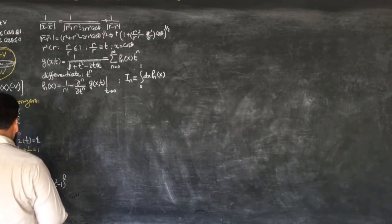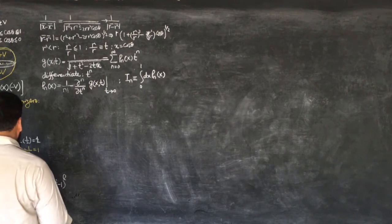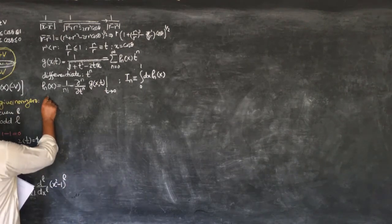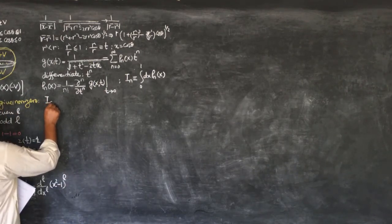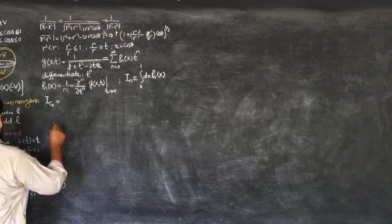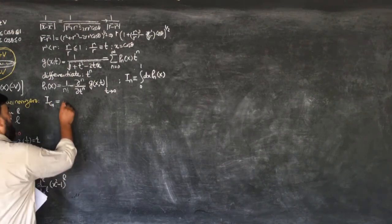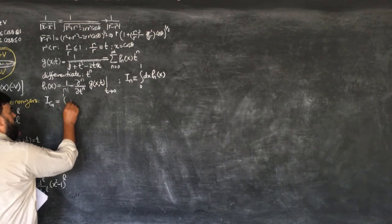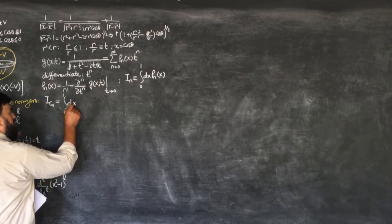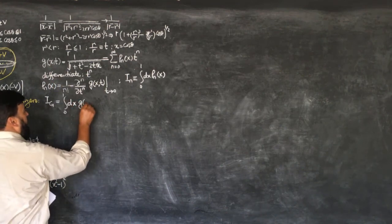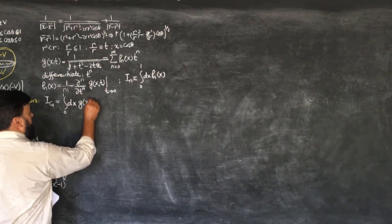Let's call I_G the integral equal to the integral from 0 to 1 of dX times G(X, T). We do this integration.